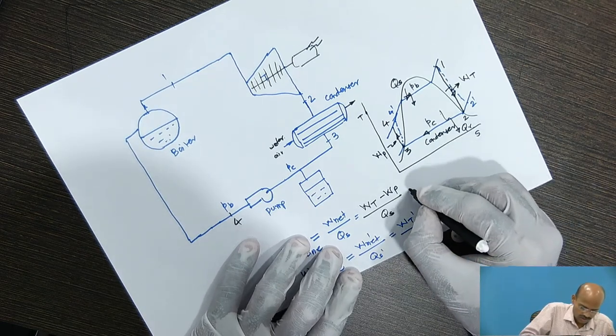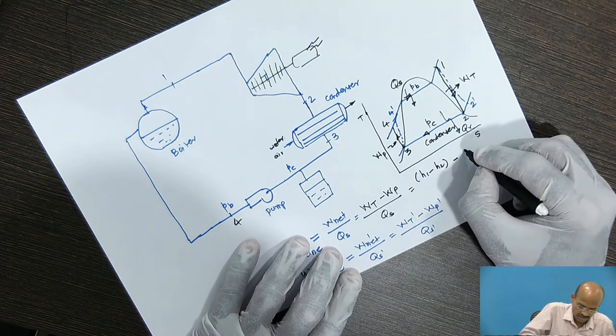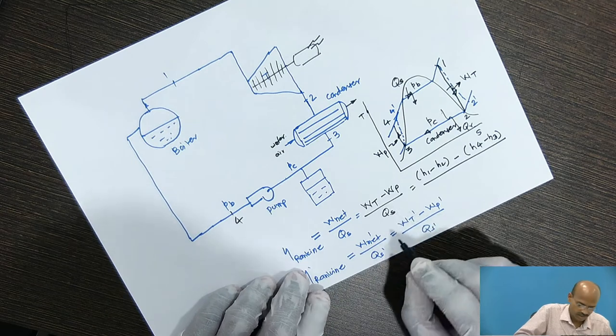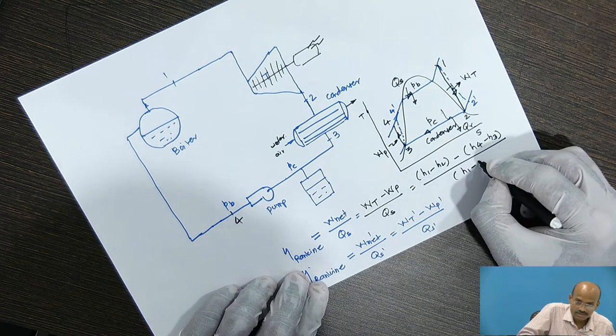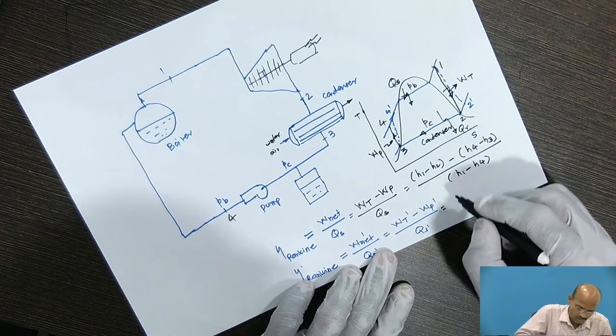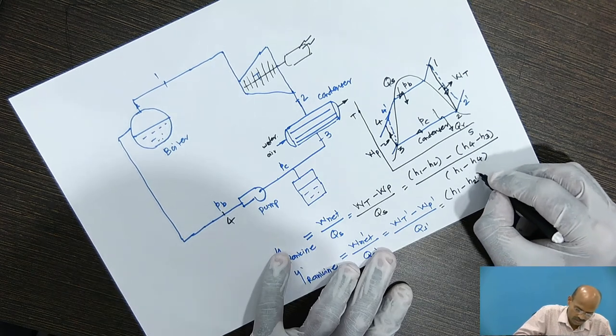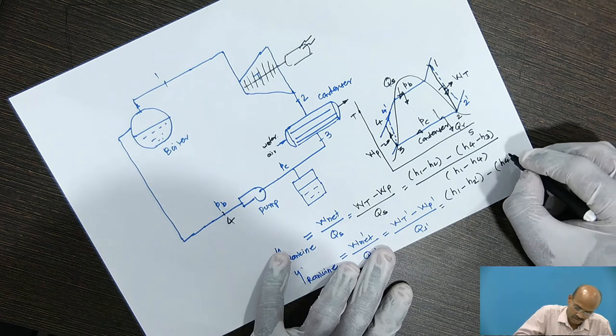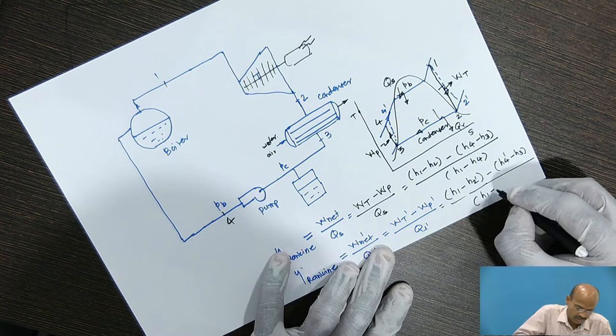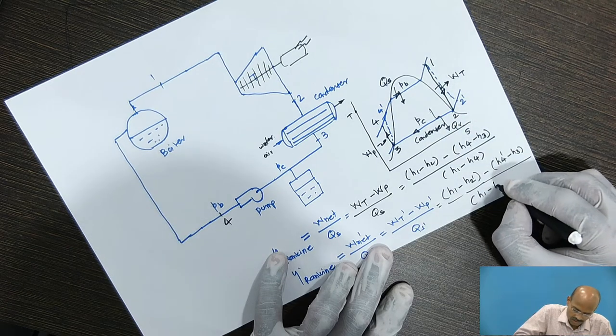Now, here Wt, theoretical case is nothing but H1 minus H2 minus Wp is H4 minus H3 divided by, for theoretical Rankine cycle, heat supplied is H1 minus H4. For actual Rankine cycle, the notation here, H1 minus H2 dash minus H4 dash minus H3 divided by H1 minus H4 dash.